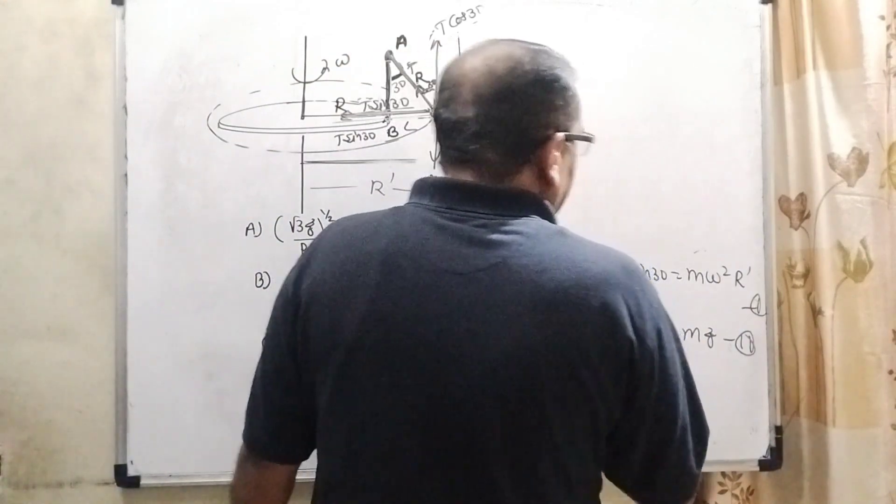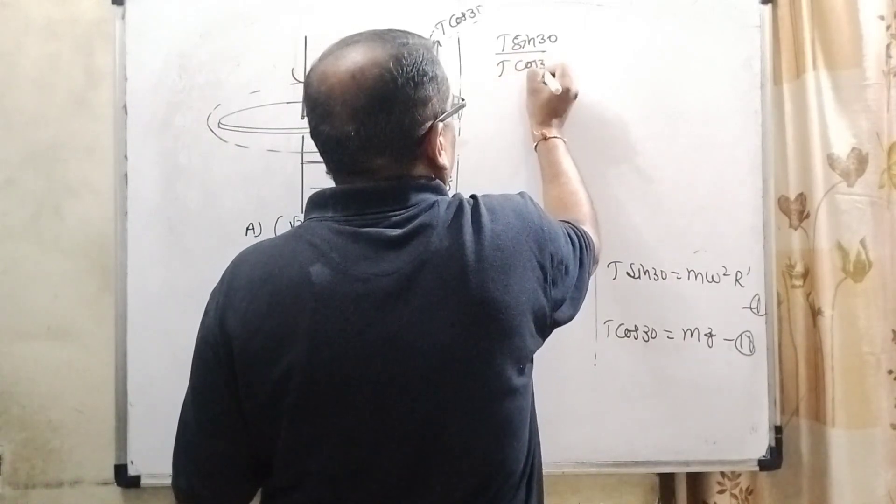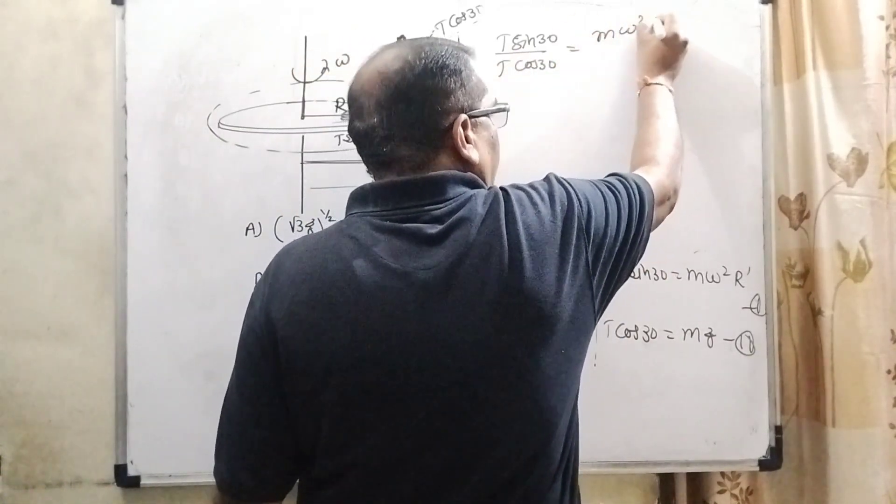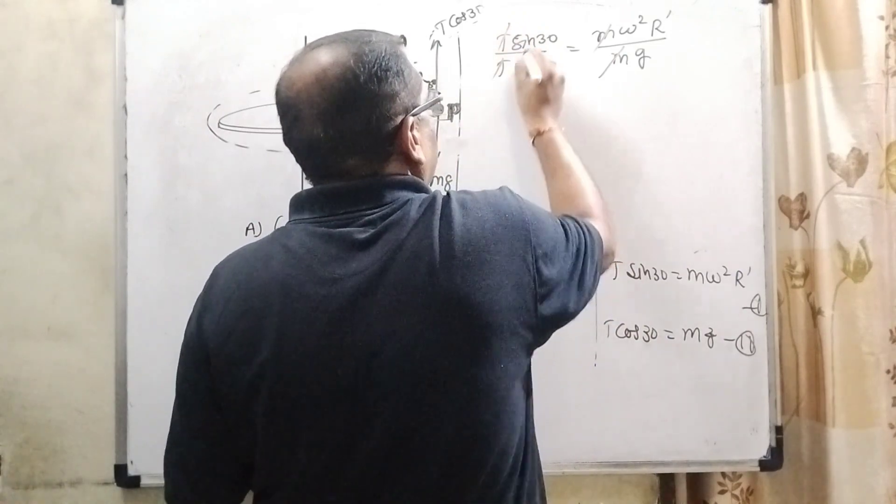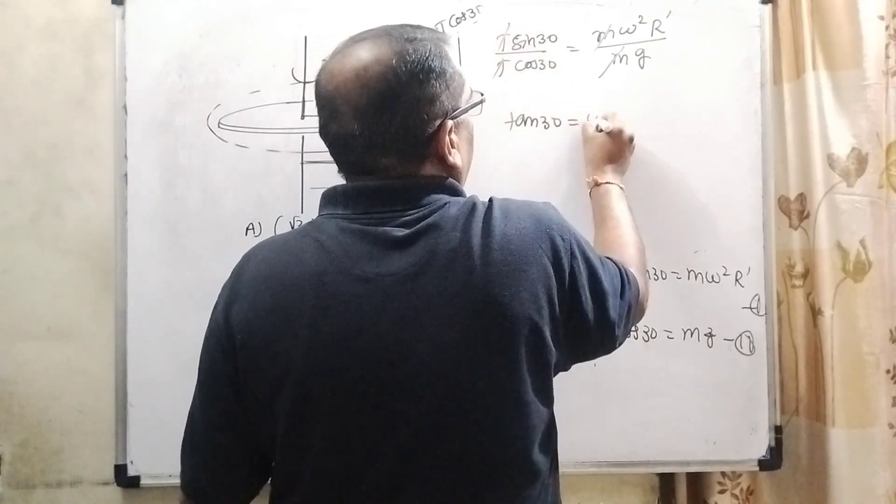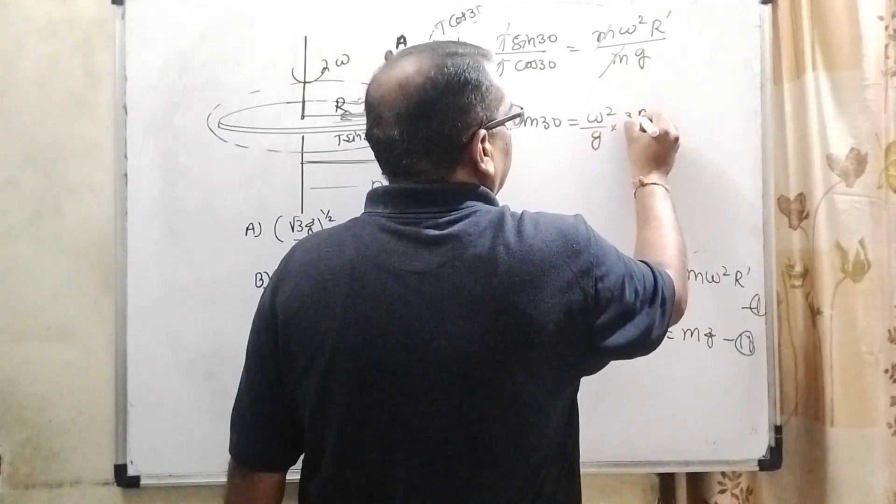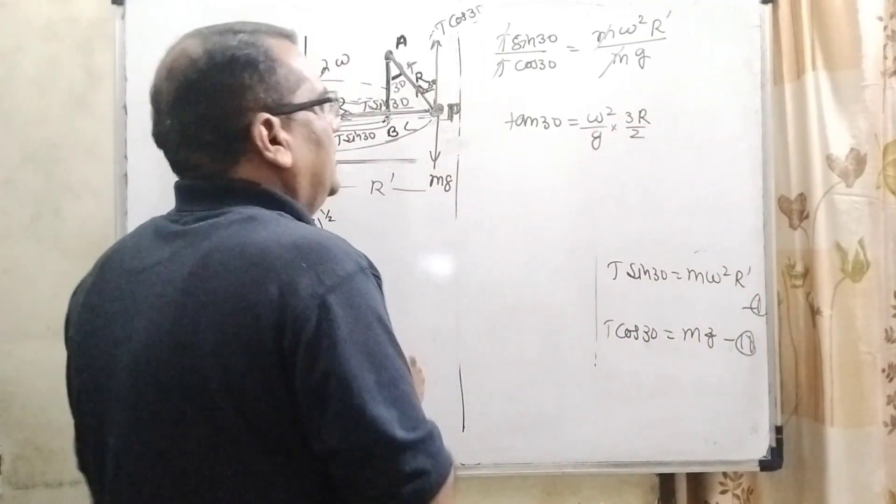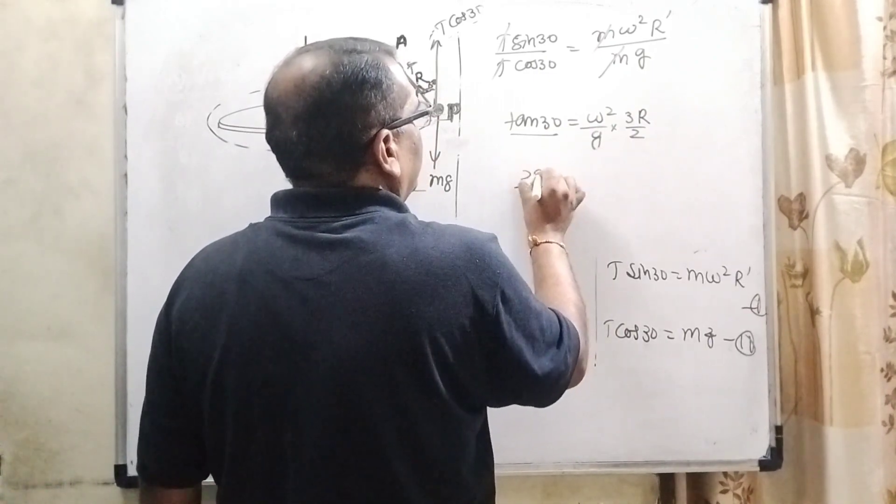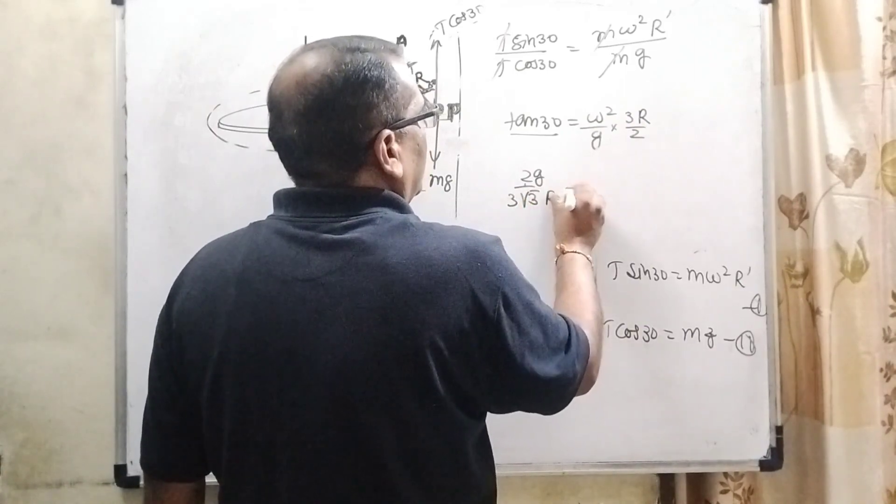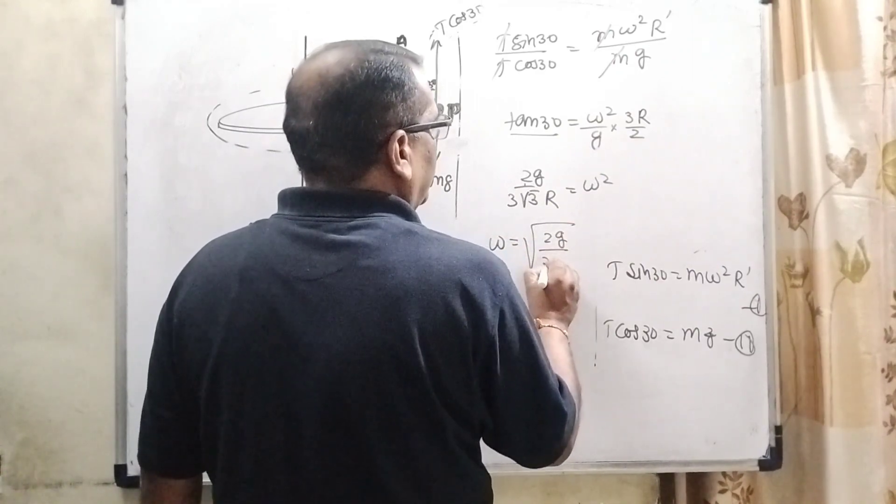Now, first equation divided by second equation then T sin 30 upon T cos 30 equal to M omega square R dash upon M G. M M cancel out T T cancel out then tan 30 omega square upon G and what is R dash? We have already found out 3R by 2. And tan 30 what is the value of tan 30? 1 by root 3 equal to omega square 3R by 2 G. Transposing this term to numerator, 2G upon 3 root 3R equal to omega square or it can be written as omega equal to root 2G upon 3 root 3R.